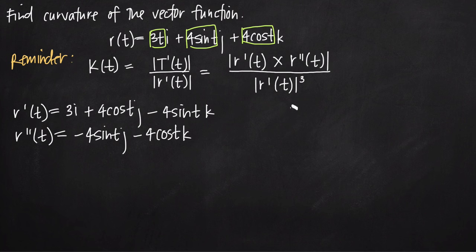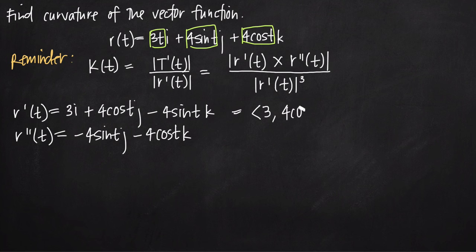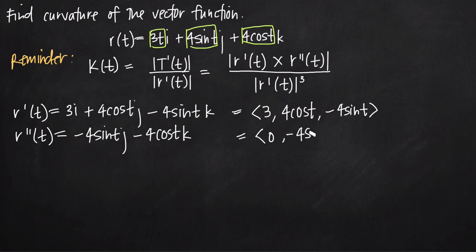Now we need magnitudes and cross products, so we pull the components out of each derivative. The components of r'(t) are: 3, 4cos(t), and negative 4sin(t). The components of r''(t) are: 0, negative 4sin(t), and negative 4cos(t). We need these to set up the cross product of r'(t) and r''(t).